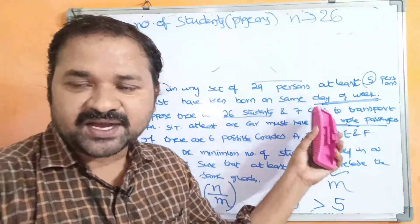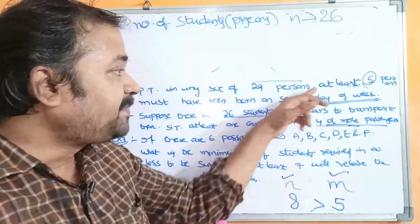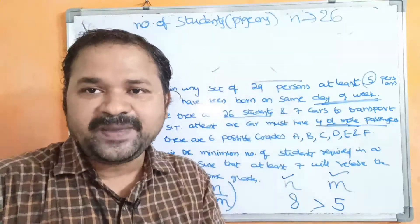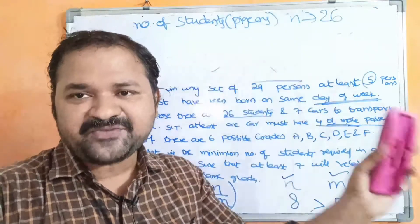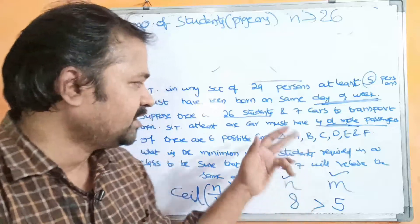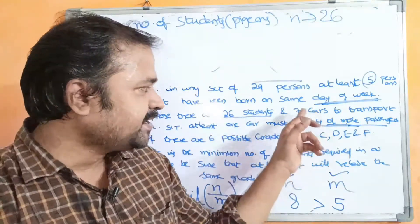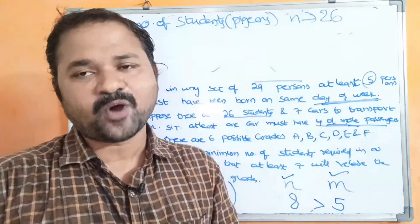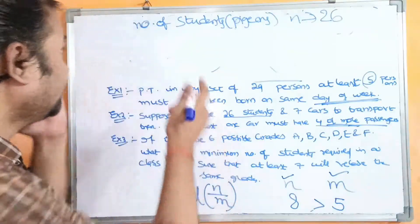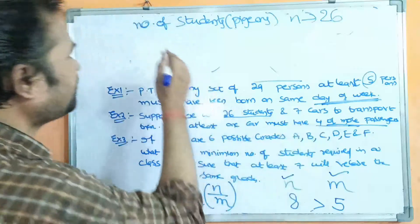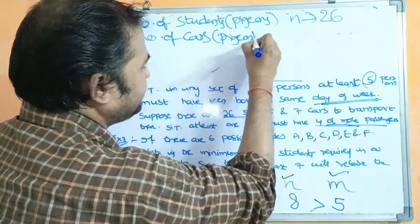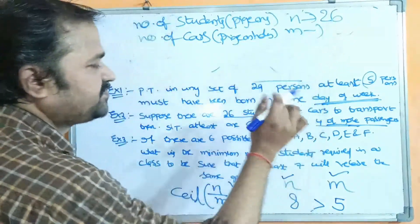Since 26 is greater than 7, n equals 26 and m equals 7. In the previous example, n was 29 (bigger value) and m was 7 (smaller value). Similarly here, n equals 26 and m equals 7. The 7 cars are the pigeonholes, so m equals 7.